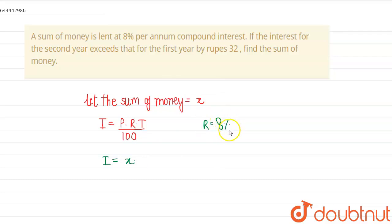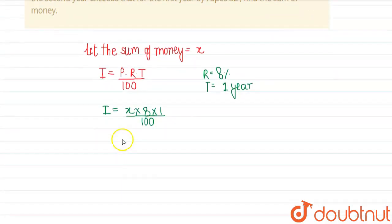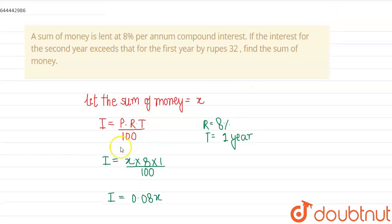The time we can do individually year by year. So for the first equation, we'll take the time as one year. So this will be x×8×1/100, which will be equal to 0.08x. This is I for the first year.